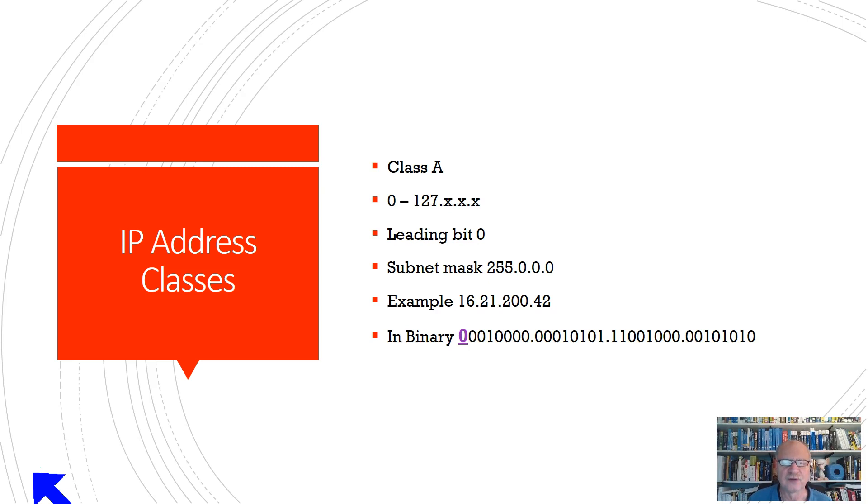Class A addresses are any address that begins with zero through 127 in the first octet. So you can say then that the leading bit is always zero, because if you think about it, this zero here in this first position, remember that this is the 128 position. There's the ones, twos, four, eight, sixteen, thirty-two, sixty-four, 128. This is the 128 position. If I put a one in this position, I'm in 128. I'm outside of this range. So it would have to have a leading bit of zero.